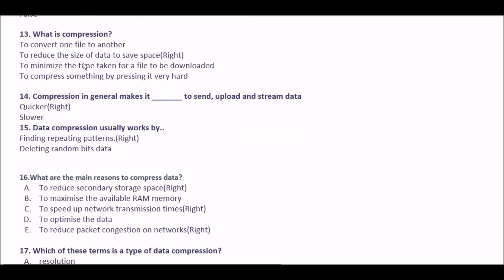Next question: what is compression? Option A to convert one file to another, option B to reduce the size of data to save space, option C to minimize the time taken for a file to be downloaded, option D to compress something by pressing it very hard. The right answer is option B: to reduce the size of data to save space.